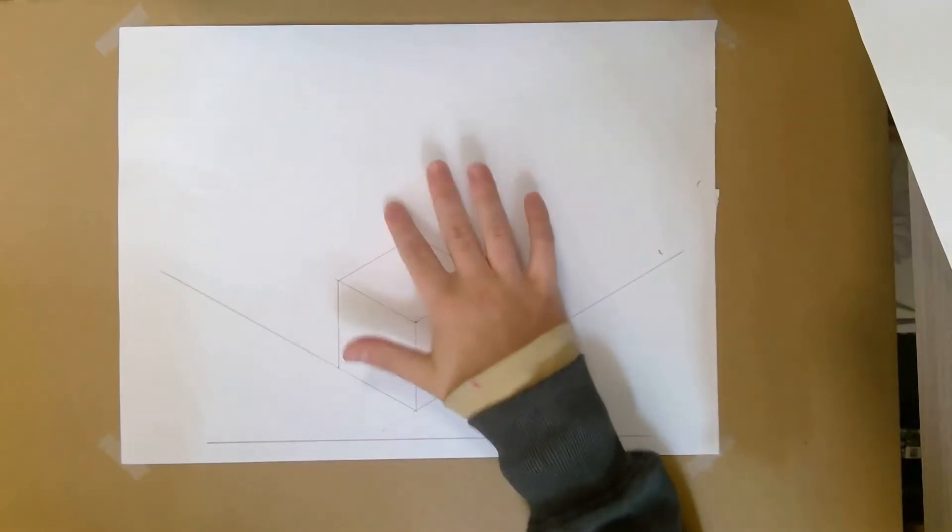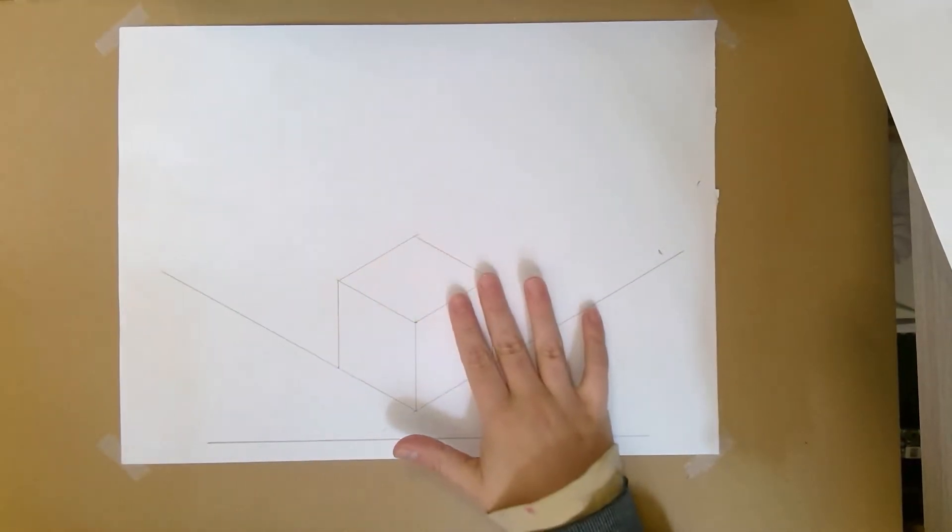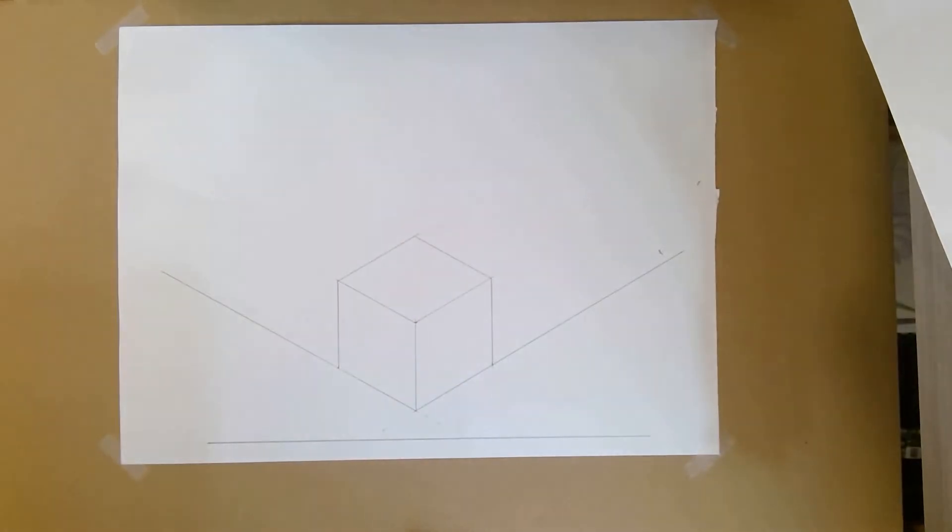So on the top, we're going to add a triangular prism to kind of construct it into a little house. And then on the faces of our cubes here, we're going to try and create some ellipses as windows. Trying to keep it nice and simple, but also to challenge you as well.